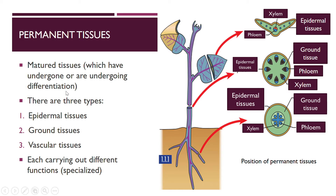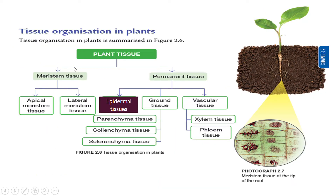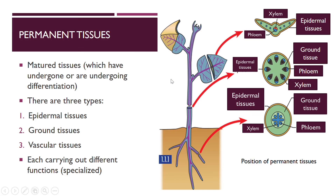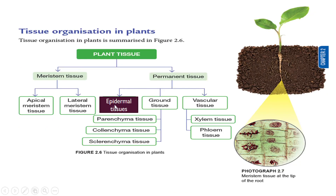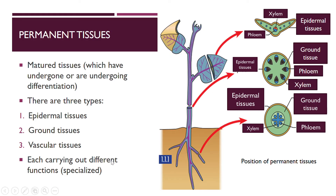Maksudnya mereka ini sudah specialized into something. Macam pelajar — mula-mula pelajar ini dia macam meristem tissue, dia sedang membahagi. Nanti bila dia sudah graduate, dia bekerja, dia akan menjadi permanent tissue. Maksudnya dia akan menjadi seseorang — maybe a teacher, maybe a doctor, a farmer, a biologist. So can you see the difference between meristem and also permanent tissue? Di bawah permanent tissue, yang kamu nampak tadi ada epidermal, ground and also vascular tissue, each carrying out different functions — they are already specialized.